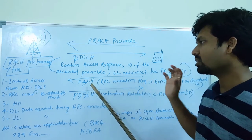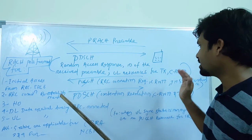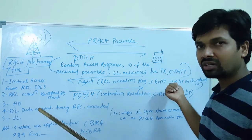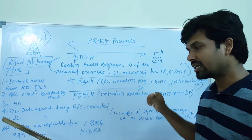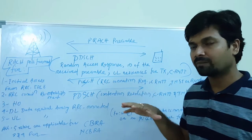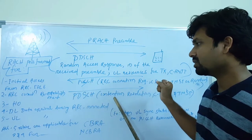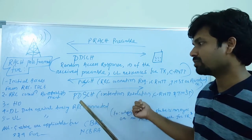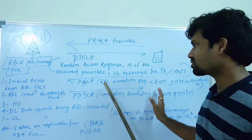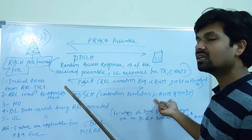Note that in contention-based random access, the C-RNTI provided in step two is temporary. In step three, the UE sends the PUSCH — the physical uplink shared channel. The information sent includes the RRC connection request, the temporary C-RNTI, and the IMSI, TMSI, or any random number depending on the state the UE is in.